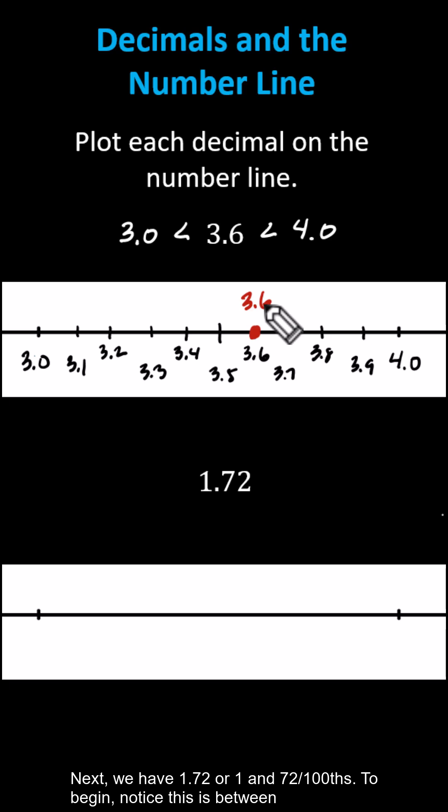Next we have 1.72 or 1 and 72 hundredths. To begin, notice this is between 1 and 70 hundredths and 1 and 80 hundredths. We'll say 1.72 is greater than 1.70 and less than 1.80.